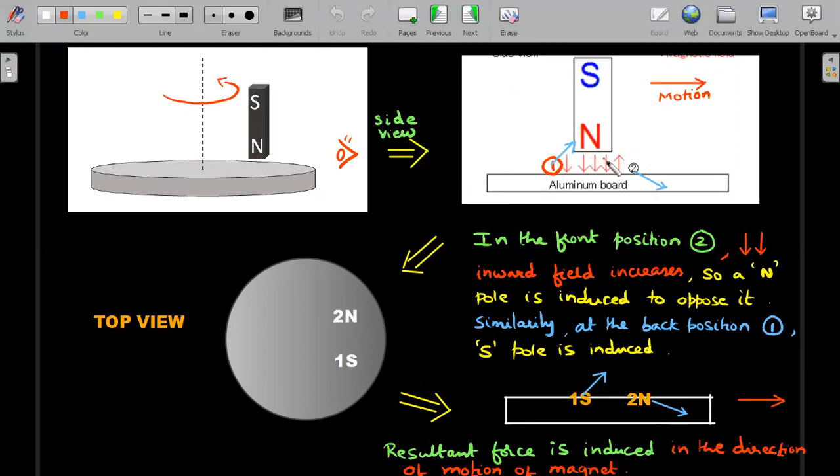The inward lines actually increase in front as it moves within next dt seconds. These inward field lines will increase in the front direction and they will decrease in the backward direction. So let's call this front and backward directions using letters.